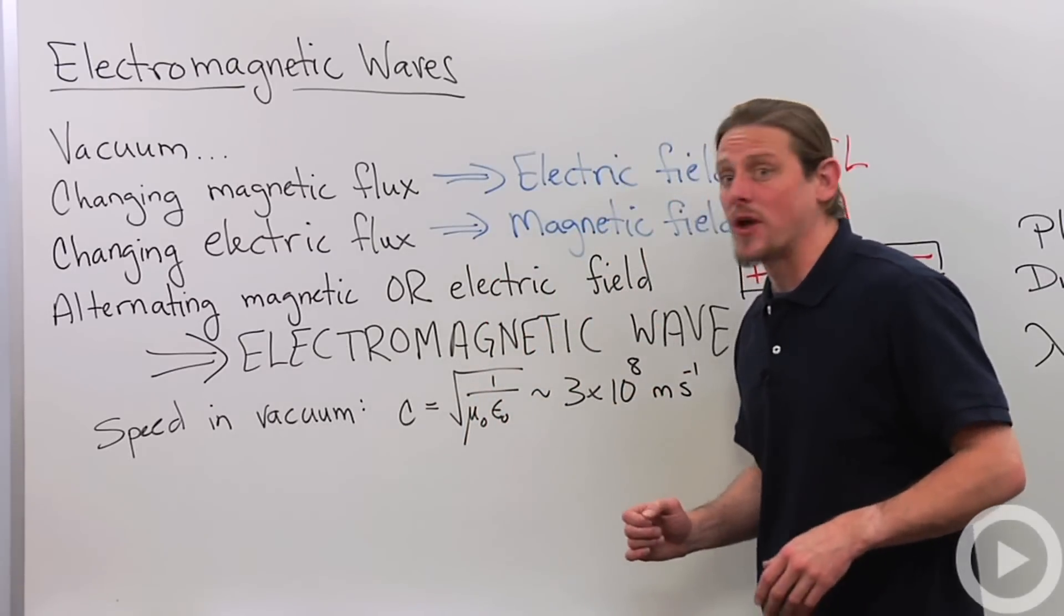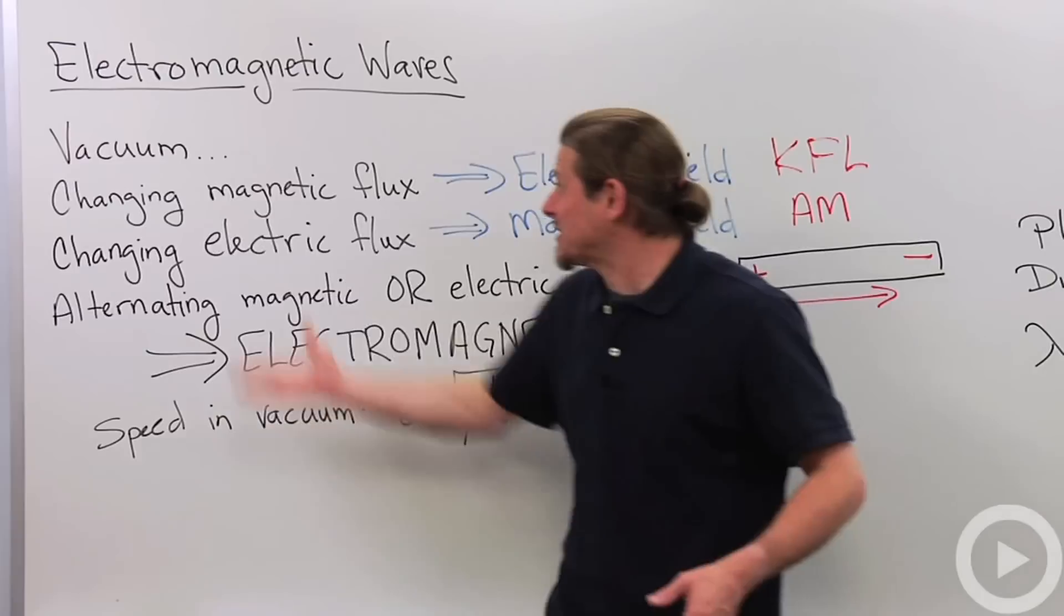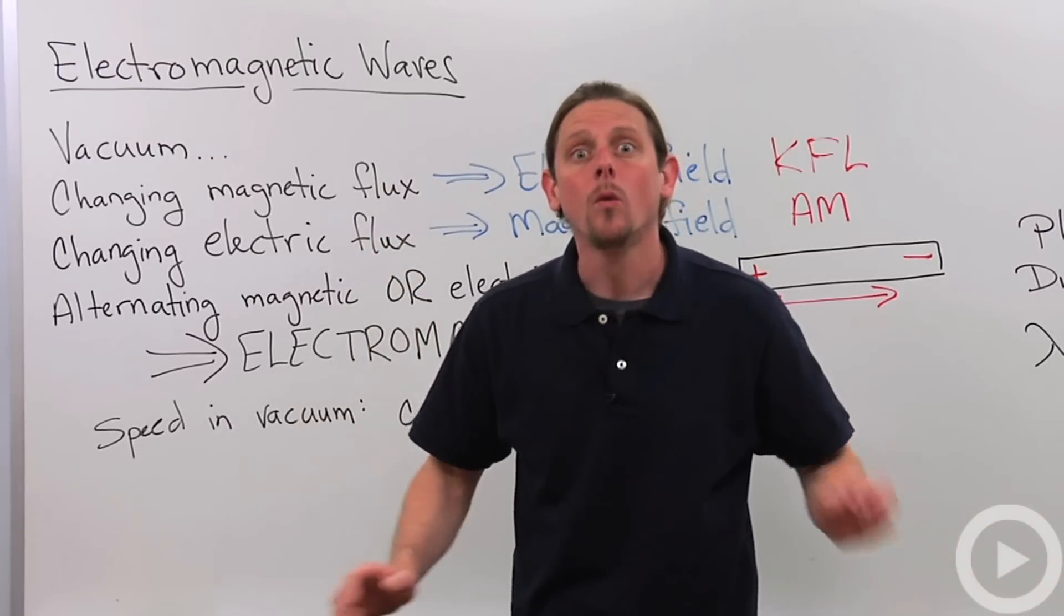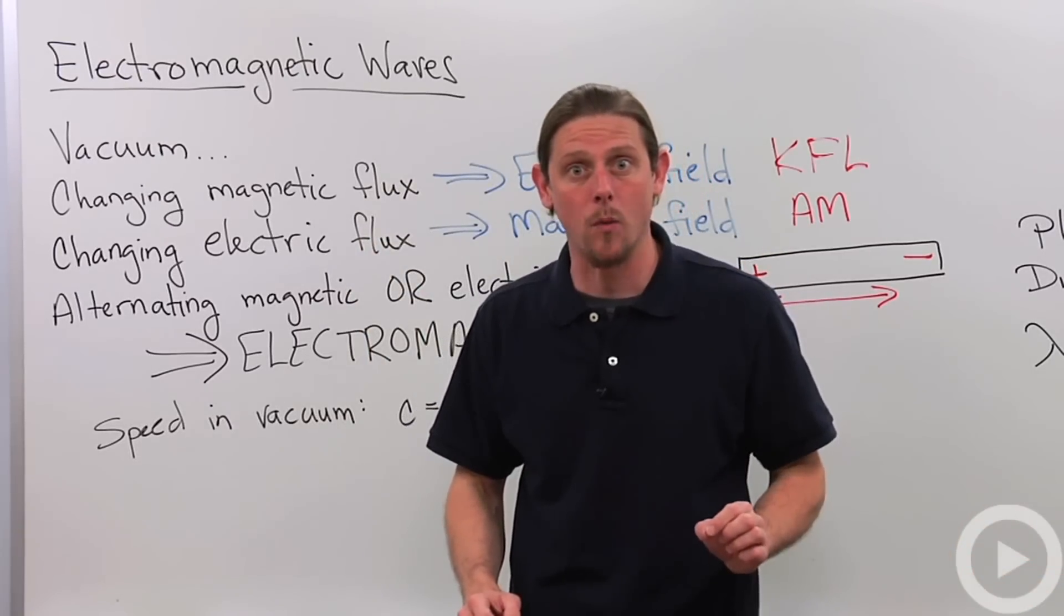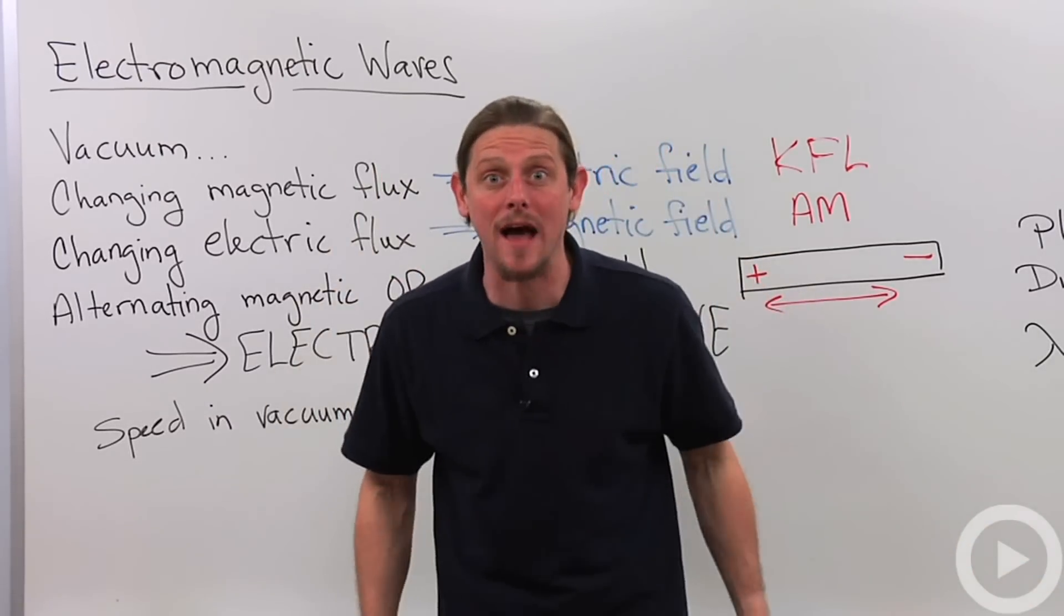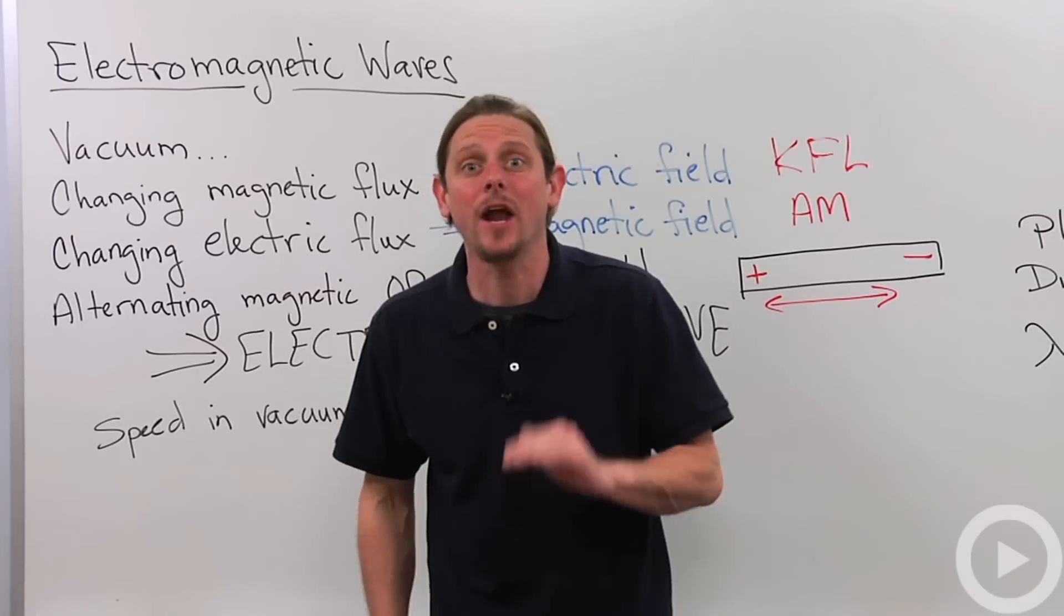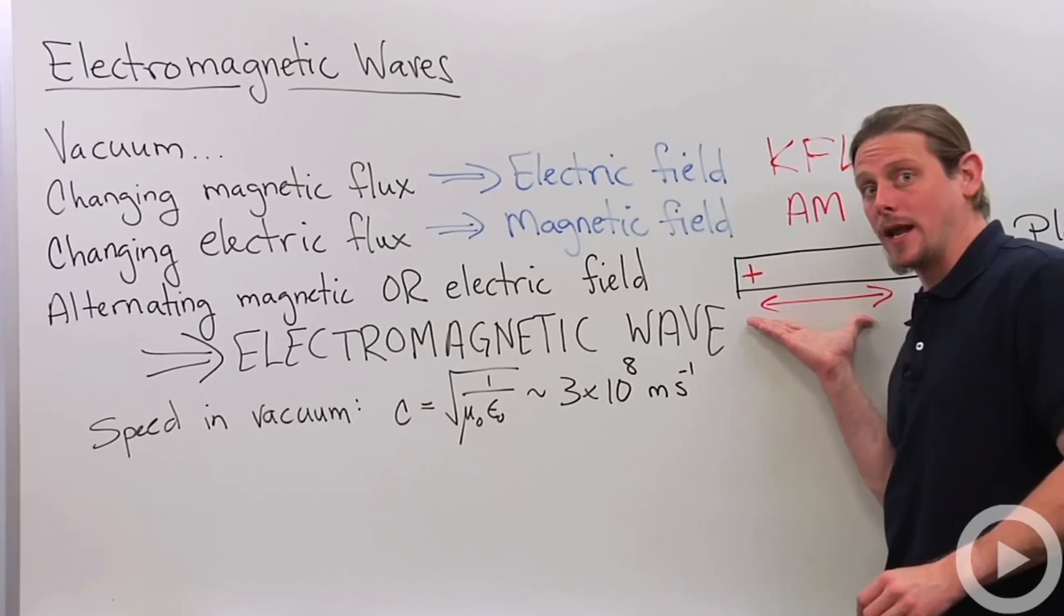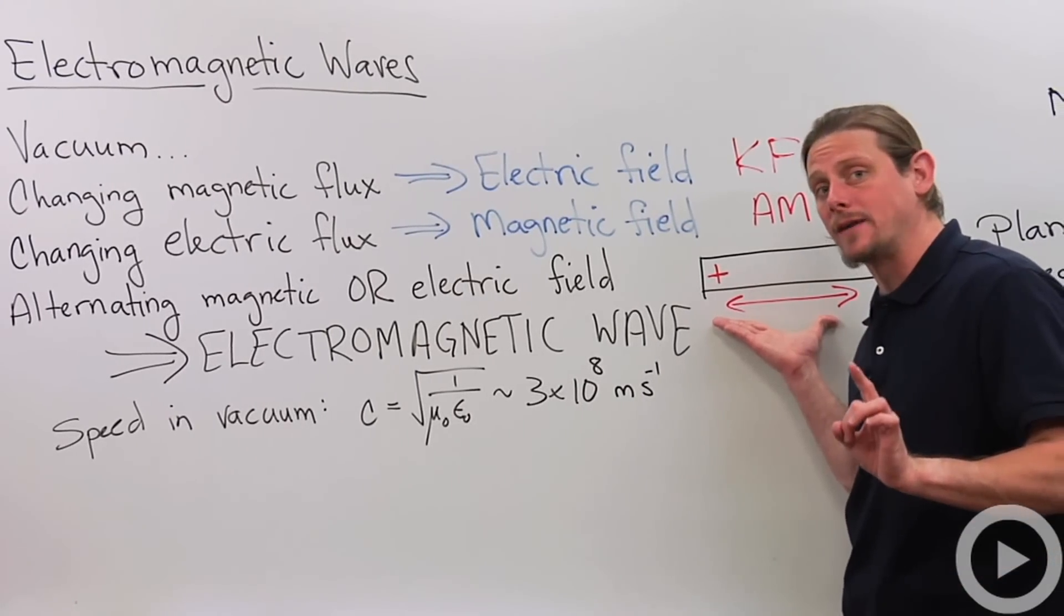Now the beautiful thing about this is that this was taking place in vacuum. So in vacuum with no medium there we can still have an electromagnetic wave and in fact we will always have an electromagnetic wave. We can't avoid it if we start off with an alternating electric or magnetic field.